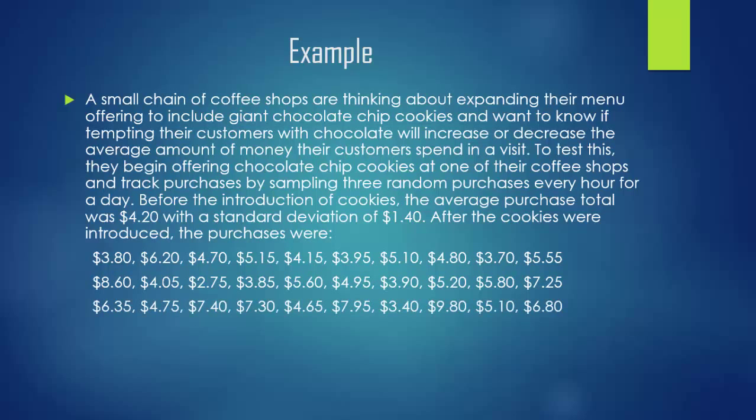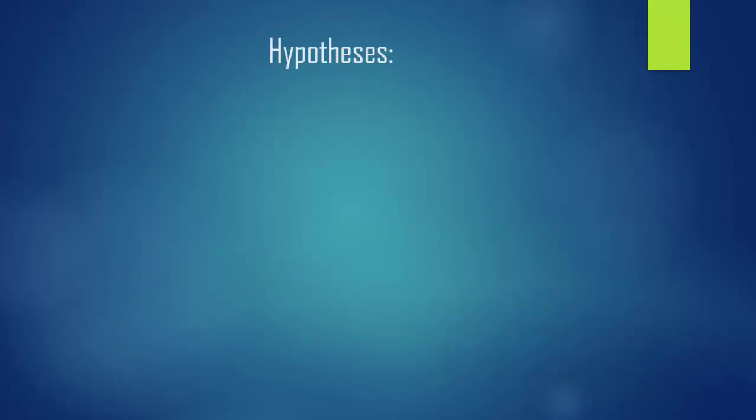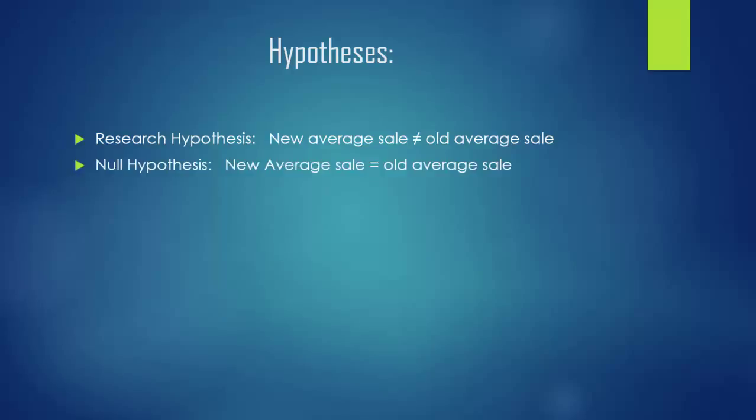With a total of 30 purchases. Using an alpha level of P less than .05, is this a significant increase in purchase amount? The coffee shop wants to know if their average sale amount goes up, but they would also want to know if their average sale amount went down. Therefore, our research hypothesis is that the new average sale amount does not equal the old average sale amount. And the null hypothesis would be that the new average sale amount does equal the old average sale amount. Simply looking at the means will tell us which direction it goes, but we need a hypothesis test to tell us whether or not that difference is significant or not.